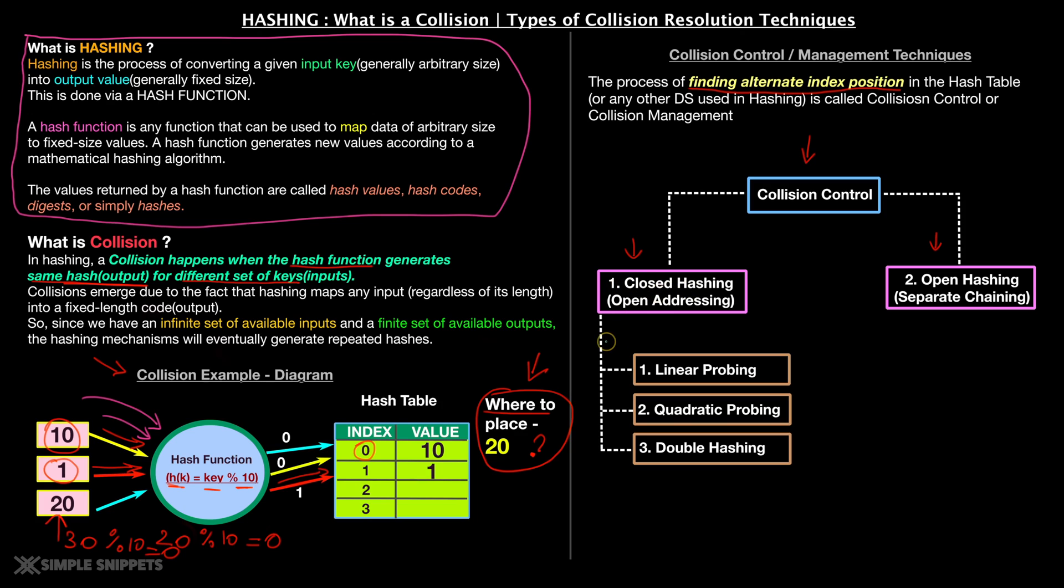And in closed hashing, we have three variants, generally three variants, which is linear probing, quadratic probing, and double hashing. Now if these terms are complicated, don't worry, we are going to go one by one and cover all these individual different techniques with examples, and we will also try to solve some questions so you will understand all those things. But for now, just understand that collision control is nothing but finding an alternate index position for this collided value. So each of these techniques will determine where to place this 20 in this table. And each of them has different way of determining the index position. That is all about collision management or collision control.